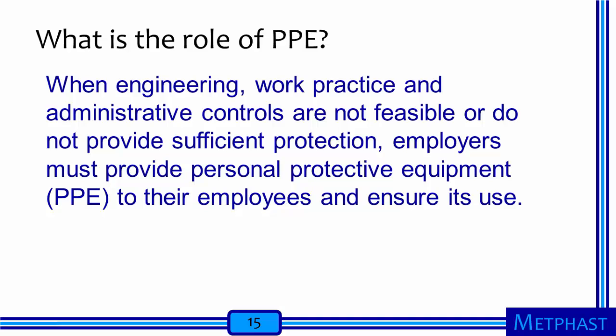Let's spend some time talking about personal protective equipment, starting with the question: what is the role of PPE? According to OSHA, when engineering, work practice, and administrative controls are not feasible or do not provide sufficient protection, employers must provide PPE to their employees and ensure its use. An important point is that the employer must make sure that the workers are using their PPE—it's the employer's responsibility to make sure it happens.